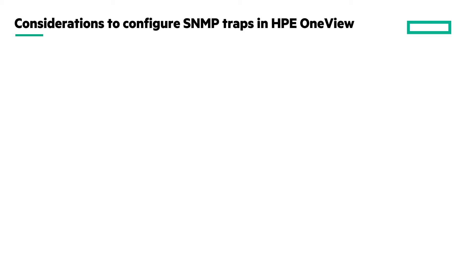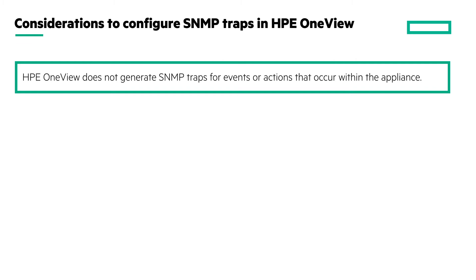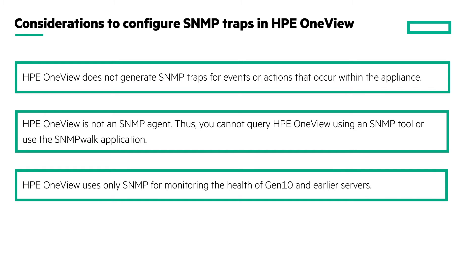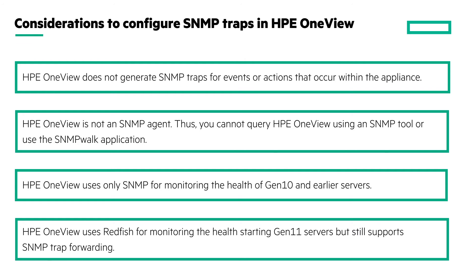While configuring SNMP for HPE OneView, here are a few points to consider. HPE OneView does not generate SNMP traps for events or actions that occur within it. You cannot query HPE OneView using an SNMP tool or use the SNMP monitoring application as it is not an SNMP agent. It only uses SNMP for the health monitoring of Gen 10 and earlier servers. Starting with Gen 11 servers, HPE OneView uses Redfish to monitor server health but still supports SNMP trap forwarding.